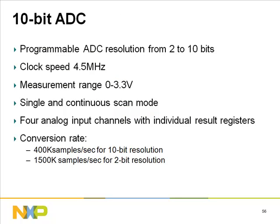The 10-bit ADC has programmable resolution from 2 to 10 bits. Clock speed is set at 4.5 MHz; measuring range is 0 to 3.3 volts. Single and continuous scan are supported with four analog input channels and individual reset registers. Conversion rate is 400K samples per second for 10-bit resolution and 1500K samples per second for 2-bit resolution.